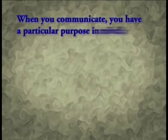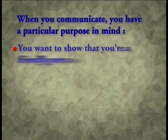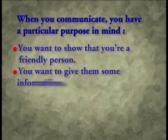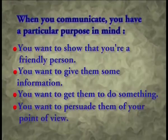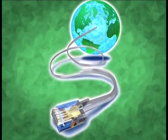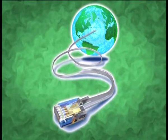Encoding is the process by which the source translates thoughts and ideas so that they can be perceived by the human senses. When you communicate, you have a particular purpose in mind — you want to show that you are a friendly person, give information, get someone to do something, or persuade them of your point of view. As the source, you have to express your purpose in the form of a message, formulated in some kind of a code. This requires an encoder.